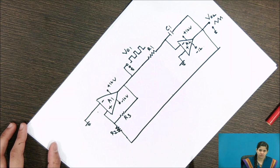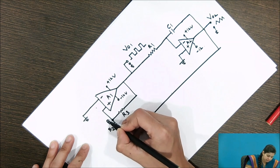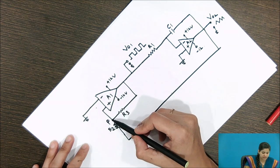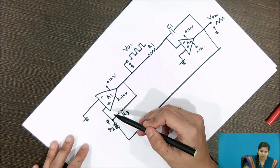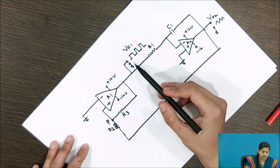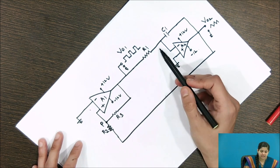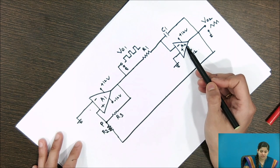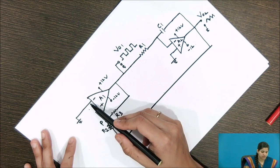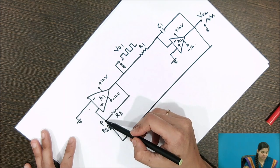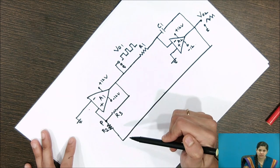Let us examine the working of this triangular wave generator. We call the feedback point P. Comparator A1 continuously compares point P with respect to ground (0V). If P goes above or below 0V, we get a positive or negative saturation voltage at the output of A1. This voltage acts as the input for the second operational amplifier A2, generating the square wave at the output of A1.